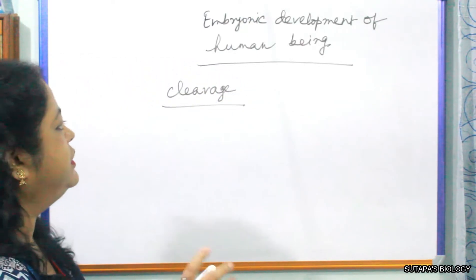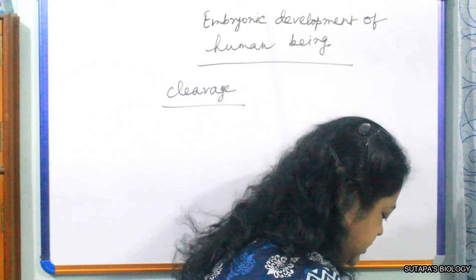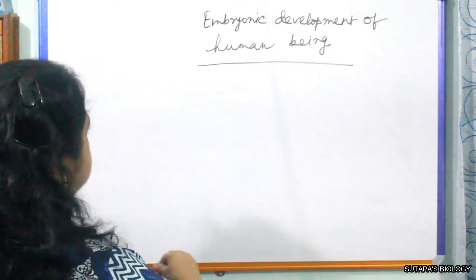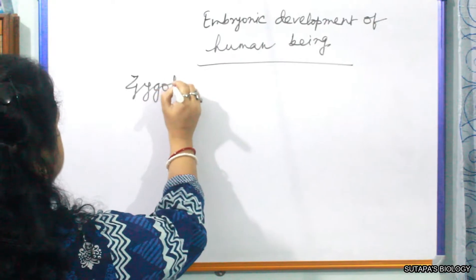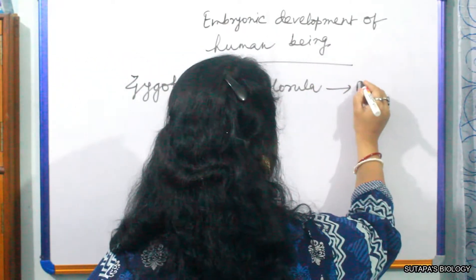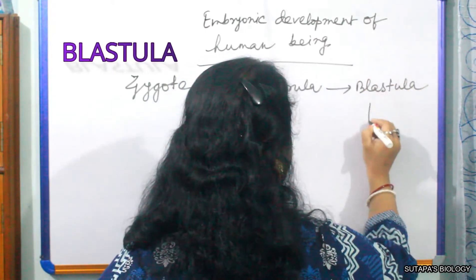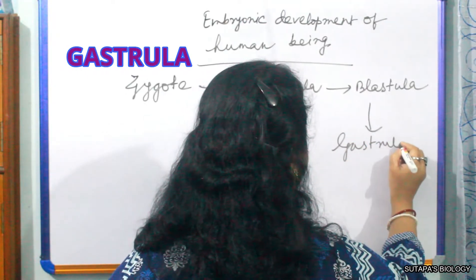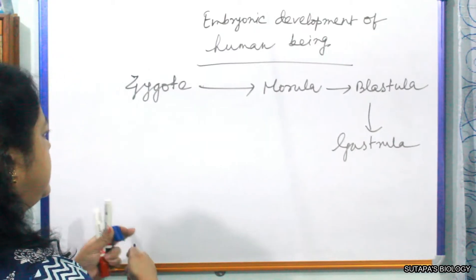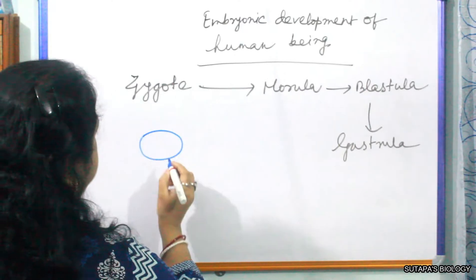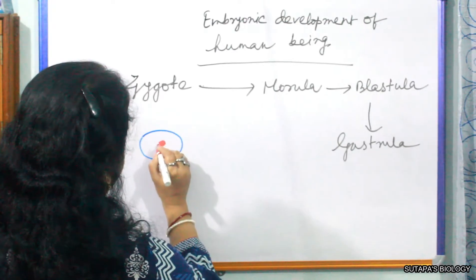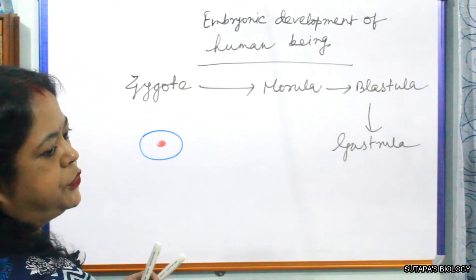After cleavage, the formation of morula occurs. So our first content is zygote; zygote will give rise to morula, morula will give rise to blastula, and next is gastrula. Now, what is zygote? That's the combination of the ooplasm and sperm after fertilization. The zygote has a nucleus, and after that it will be converted to morula by cleavage.